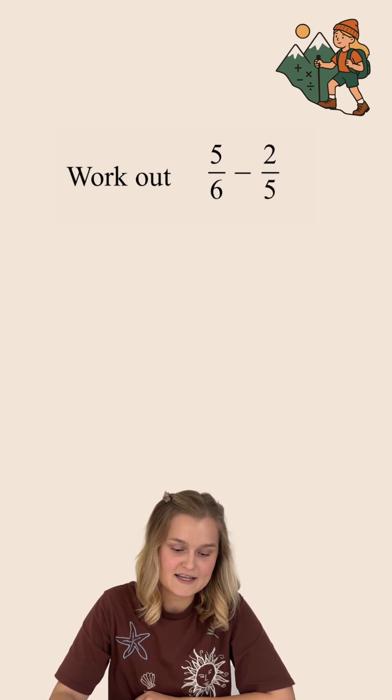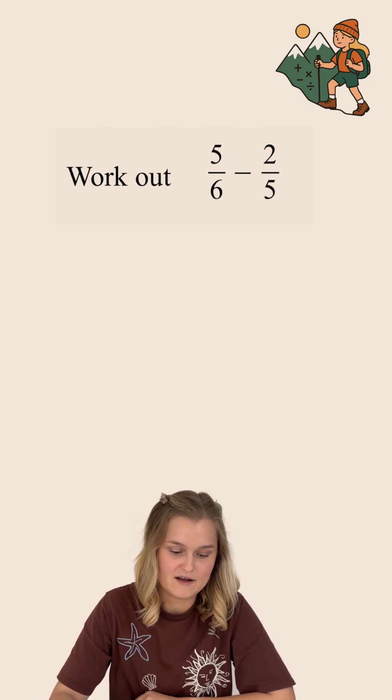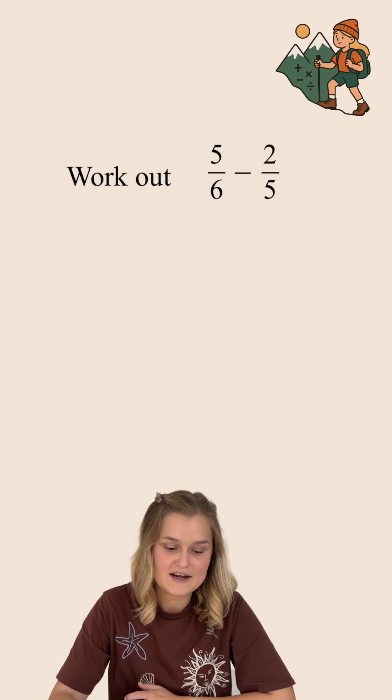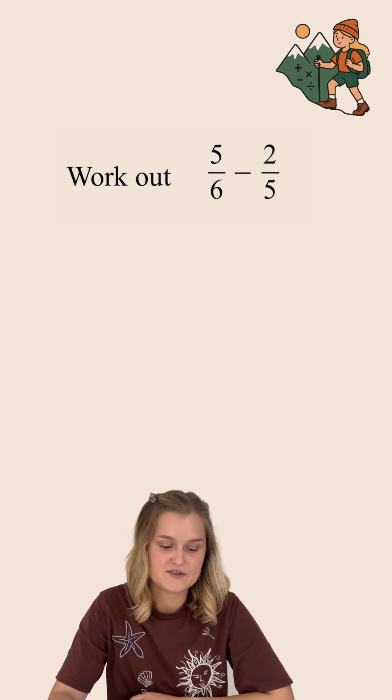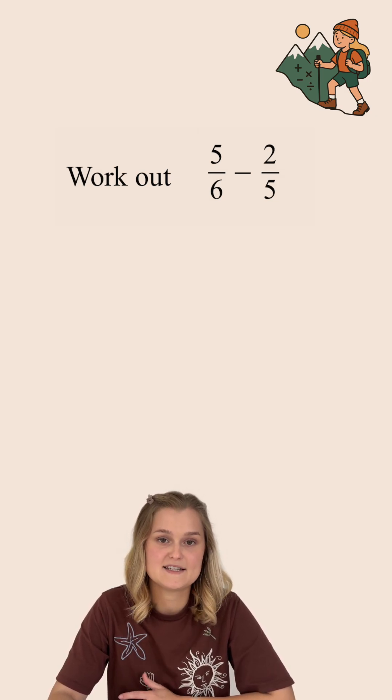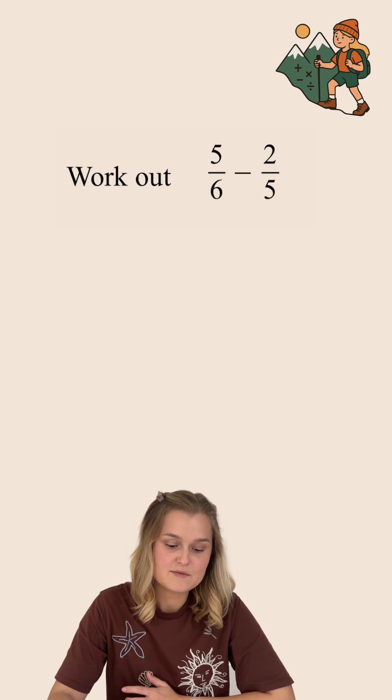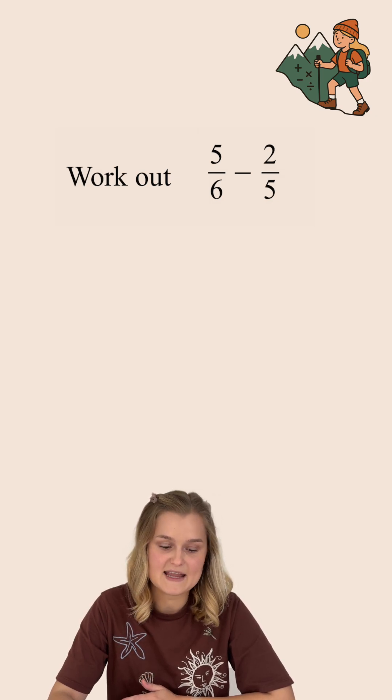We are going to work out 5 over 6 subtract 2 over 5. Now, whenever you are subtracting fractions or adding fractions, you have to have a common denominator. That means the number at the bottom of both fractions needs to be the same.